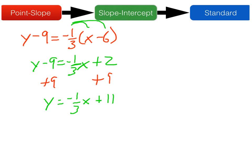Next, our job is to turn that into standard form. Again, we want the x's and the y's to live on the same side of the equals sign. So we'll add positive 1/3 x to both sides.